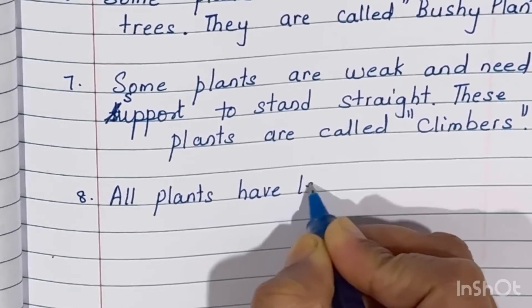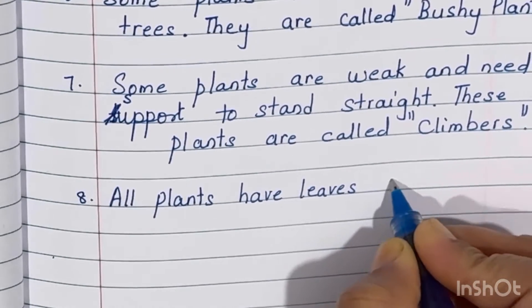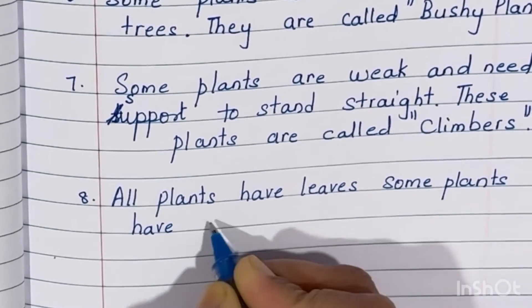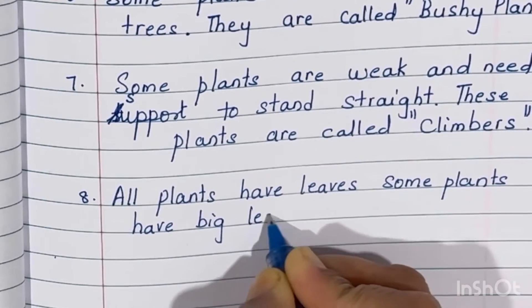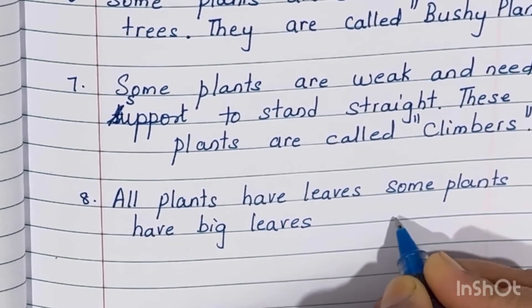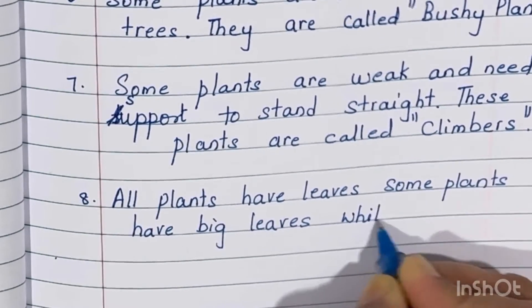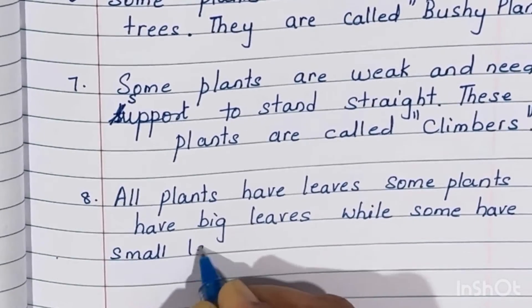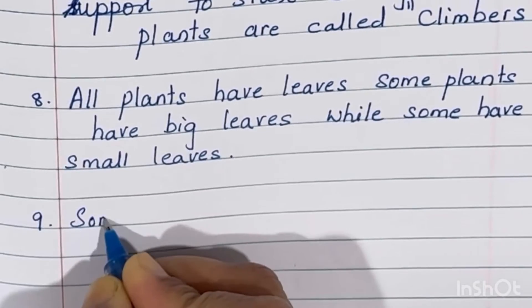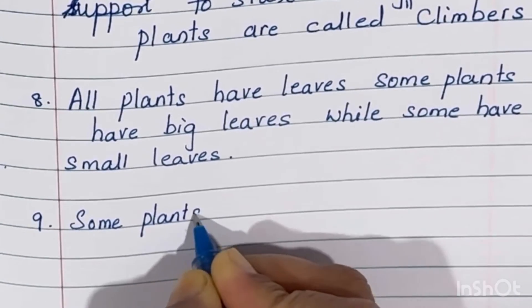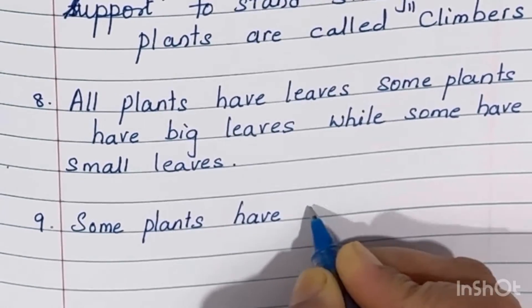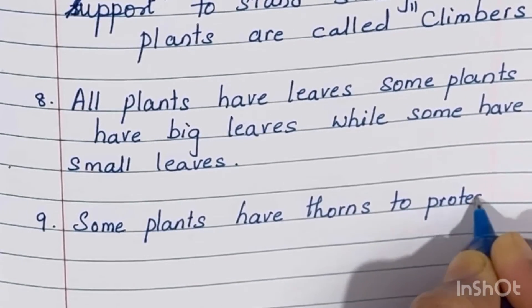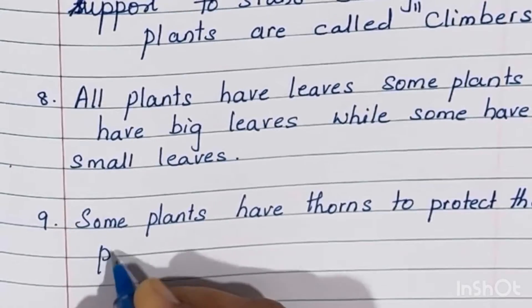All plants have leaves. Some plants have big leaves while some have small leaves. Some plants have thorns to protect the plants.